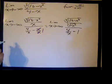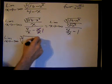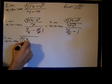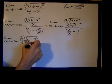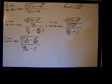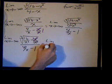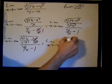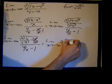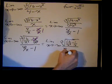Now we can rewrite this all under the same root. So we have the limit as x goes to negative infinity of the cube root of 16 over x cubed minus x squared over x cubed, divided by 4 over x minus 1. We simplify — x squared over x cubed reduces, and we're left with the limit as x approaches negative infinity of the cube root of 16 over x cubed minus 1 over x, divided by 4 over x minus 1.